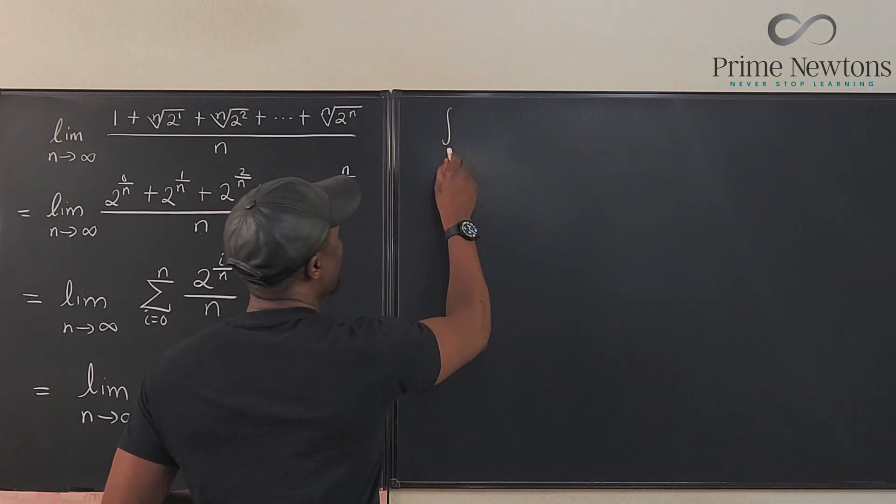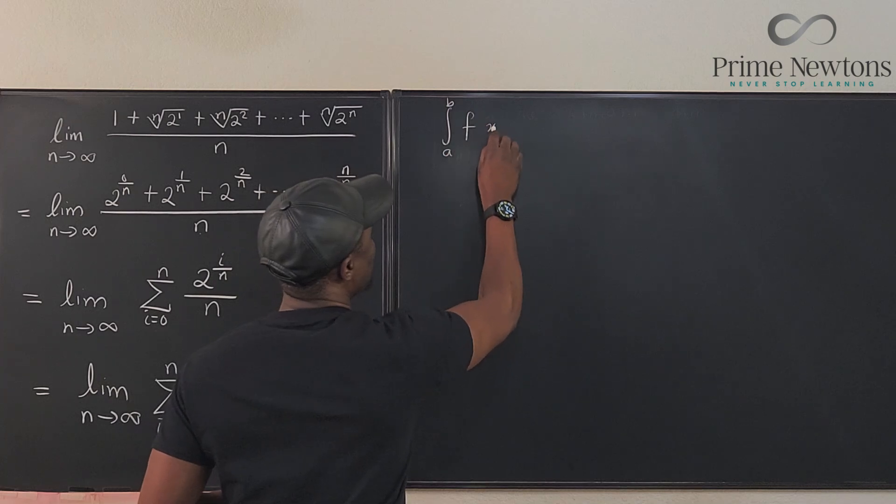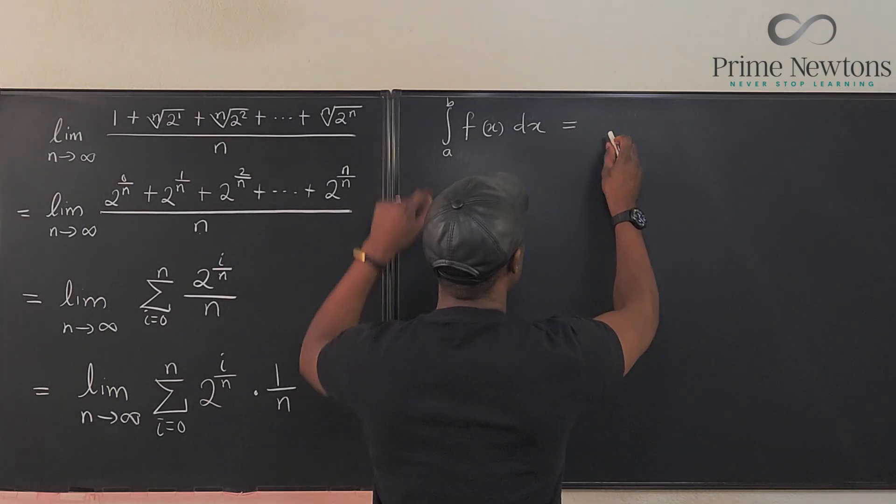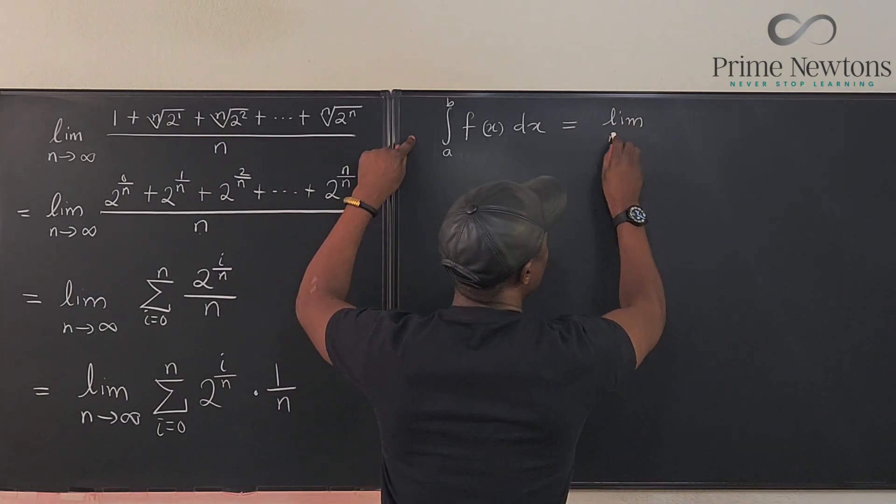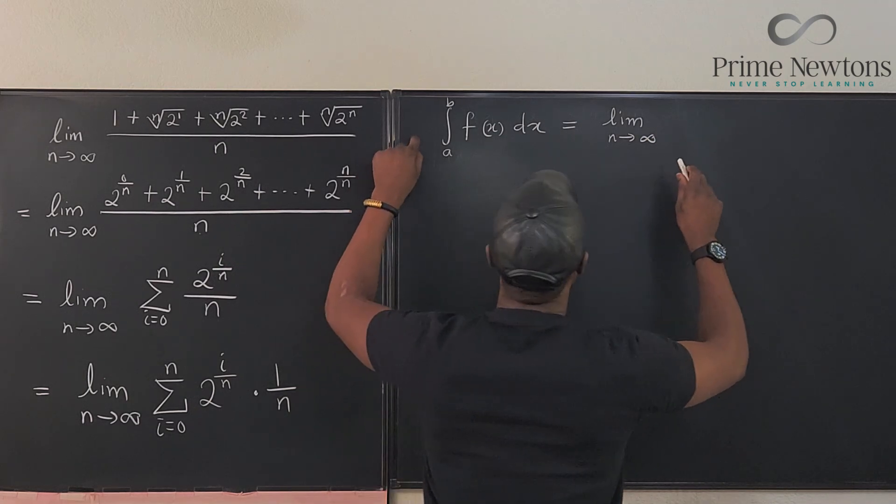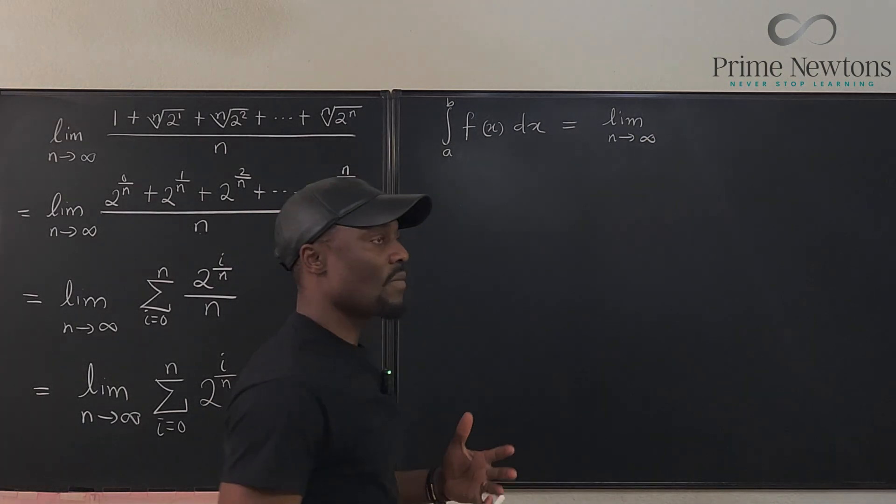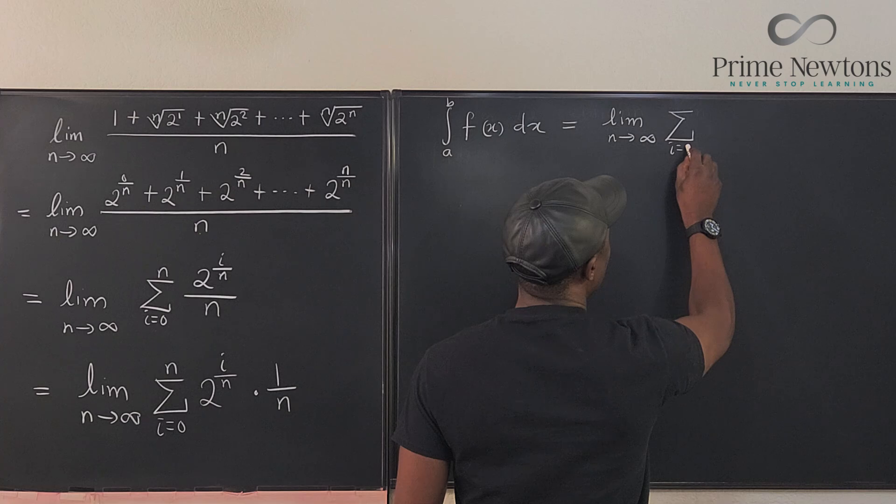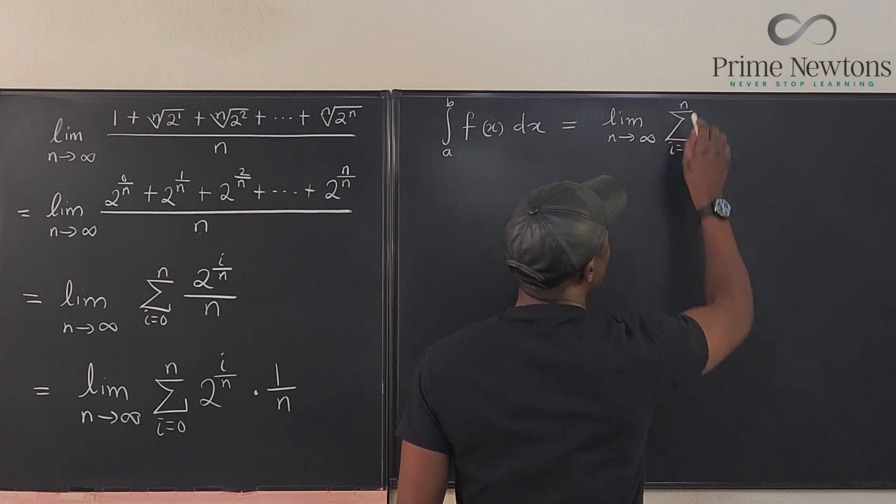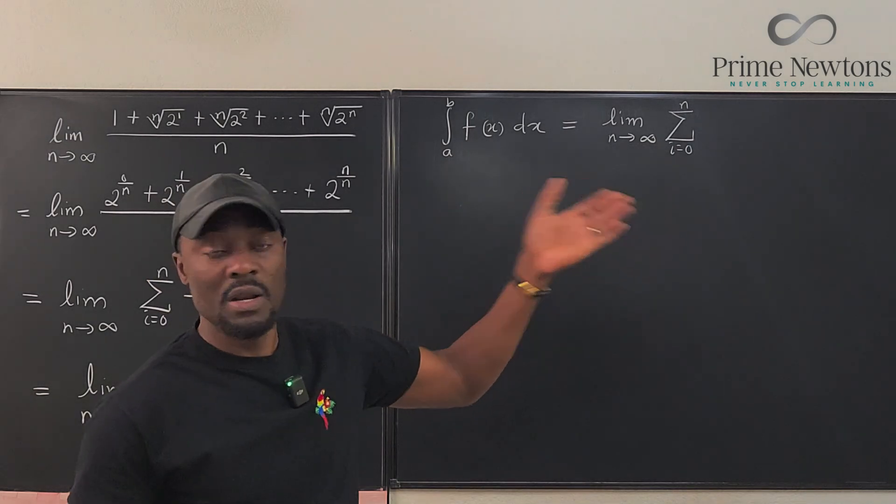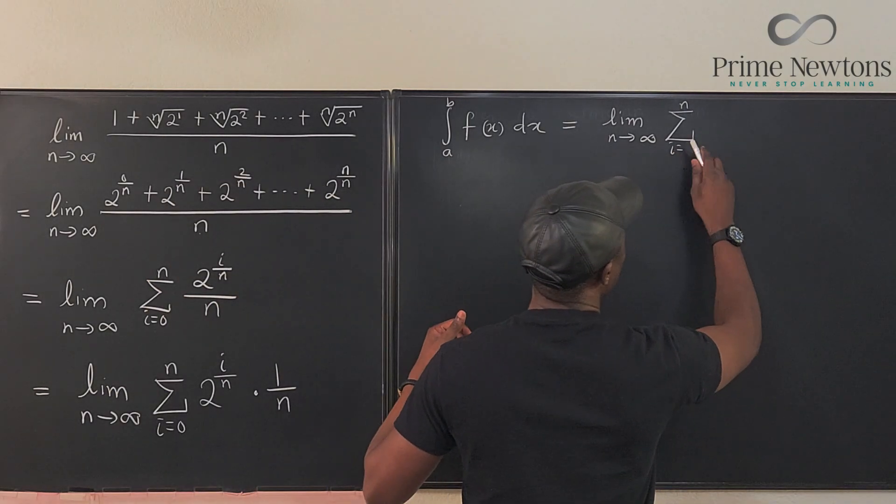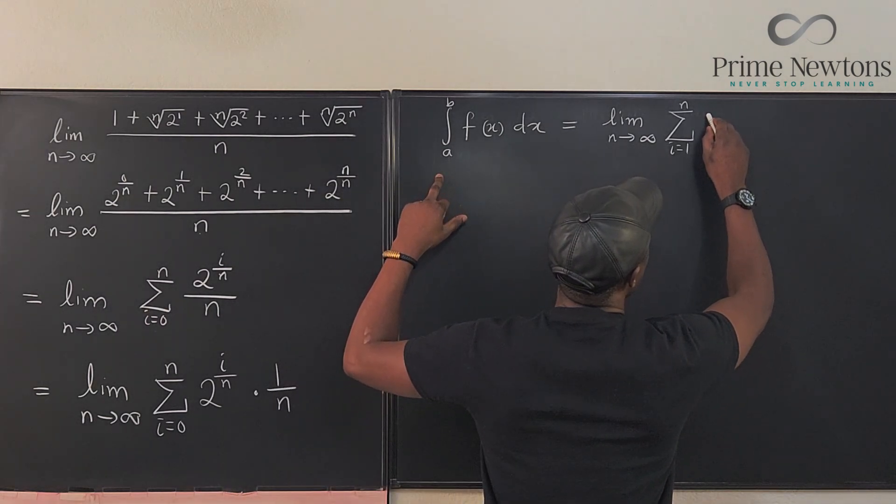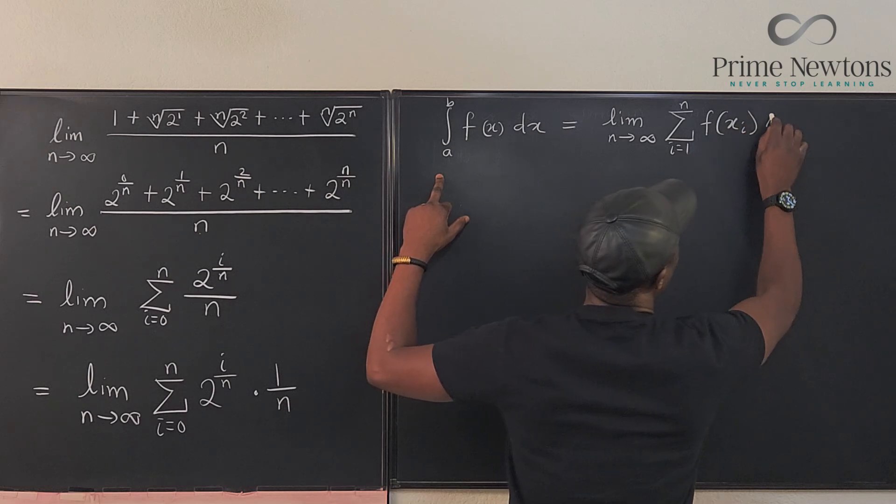If you get the integral from a to b of f of x dx, from the definition of the integral, we know that this is equal to the limit as n goes to infinity of, we're going to have the limit of the sum. We're going to have this sum from i equals, let's say 1, the number of rectangles you're going to be using, which is going to be f of xi delta x.